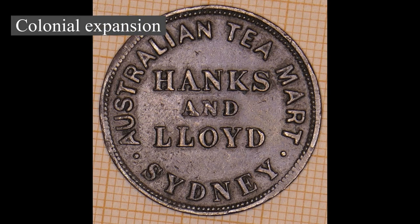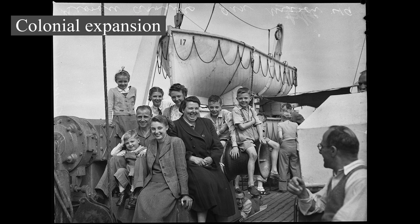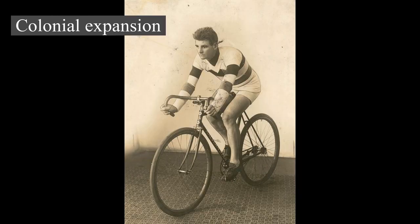The British continued to push into other areas of the continent in the early 19th century, initially along the coast. In 1803, a settlement was established in Van Diemen's Land, present-day Tasmania, and in 1813, Gregory Blaxland, William Lawson, and William Wentworth crossed the Blue Mountains west of Sydney, opening the interior to European settlement. The British claim extended to the whole Australian continent in 1827, when Major Edmund Lockyer established a settlement on King George Sound, modern-day Albany. The Swan River Colony, present-day Perth, was established in 1829, evolving into the largest Australian colony by area, Western Australia.